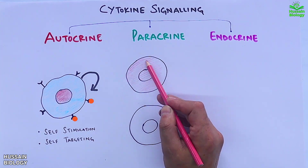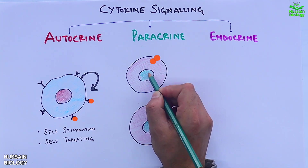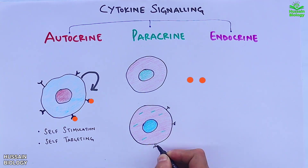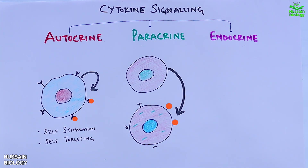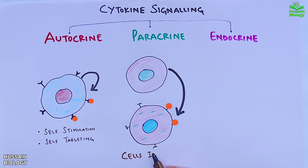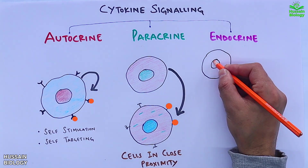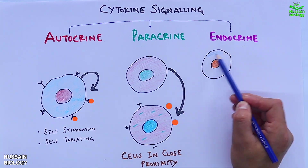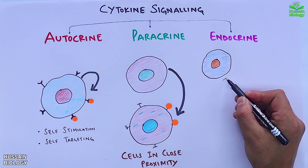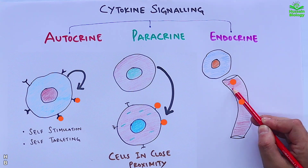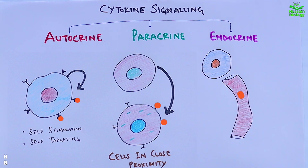The second one is paracrine signaling. Here in this diagram, the activated T helper cell secretes cytokines and the cells in near proximity receive these cytokines secreted from the T helper cell. This way the signaling is mediated between cells which are in close proximity.